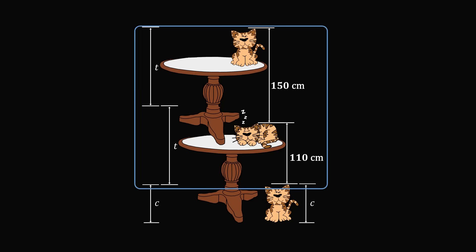We now see that the height of two tables is exactly given by the known distances. So T + T = 150 + 110, meaning 2T = 260. Dividing both sides by 2, T = 130 centimeters. And that's the visual way to solve this problem.